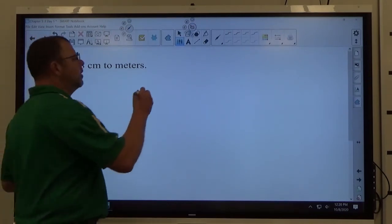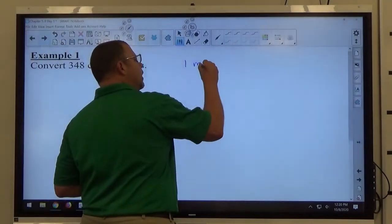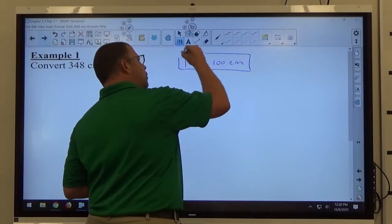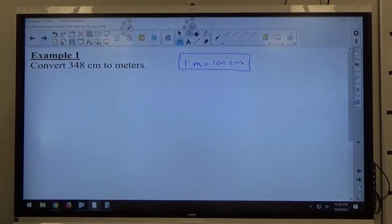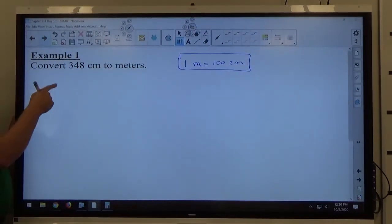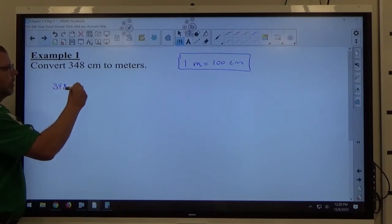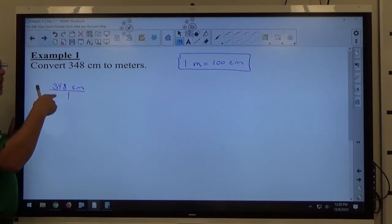if we know a fact, one meter equals 100 centimeters, that's my equivalent measure fact that I know. And I'm trying to convert from something to something, so 348 centimeters I'm trying to convert to meters.